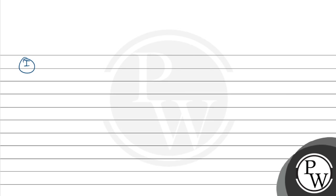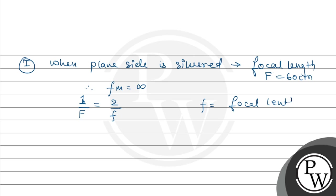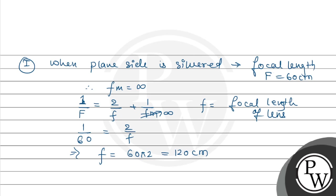In the first case, when the plane side is silvered, fm is infinity. The equivalent focal length F is 60 cm. So 1/60 equals 2/f plus 1/fm. Since fm is infinity, the term 1/fm equals 0. Therefore 1/60 equals 2/f, giving us the focal length of the lens as 60 × 2 = 120 cm.